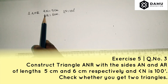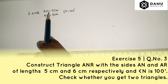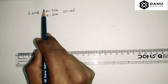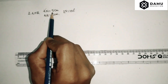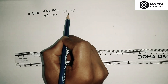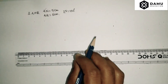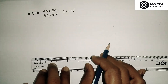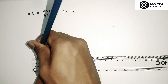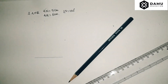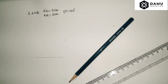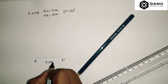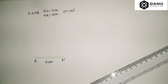First, which line should we draw — AR or AN? The angle is given at vertex N, which is present in line segment AN, so it is better to draw AN first. Keep your scale horizontally and draw 5 centimeters. This line segment AN is equal to 5 centimeters.